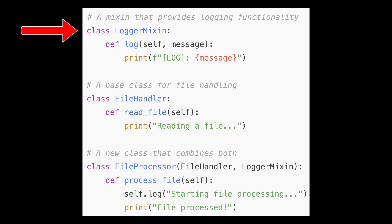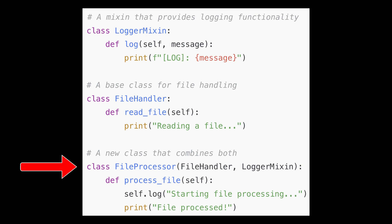LoggerMixin is a tiny class that provides a log method. FileHandler does the main file-related work, and FileProcessor combines both — it inherits the file handling capabilities from FileHandler and the logging feature from LoggerMixin.